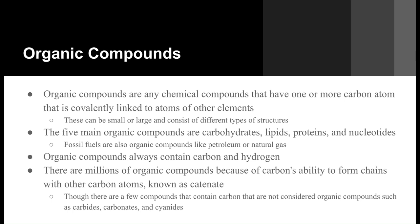Organic compounds: organic compounds are any chemical compounds that have one or more carbon atoms covalently linked to the atoms of other elements. These can be seen as small or large and consist of different types of structures. There are five main organic compounds, which consist of carbohydrates, lipids — which can also be seen as fats — proteins, and nucleotides.